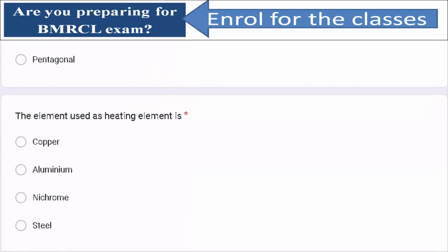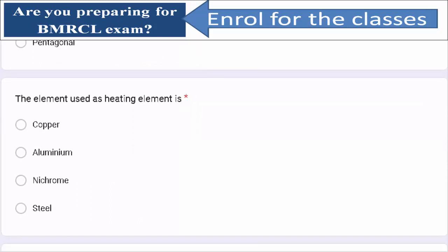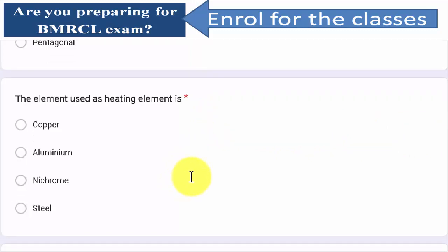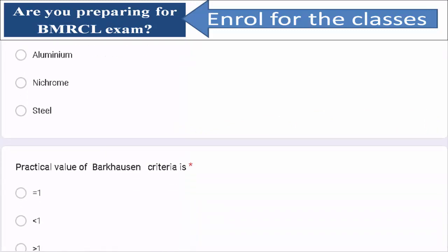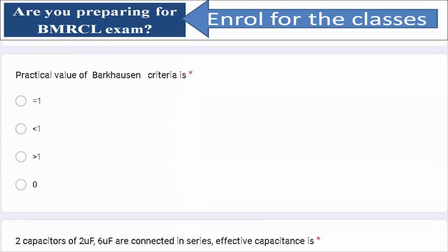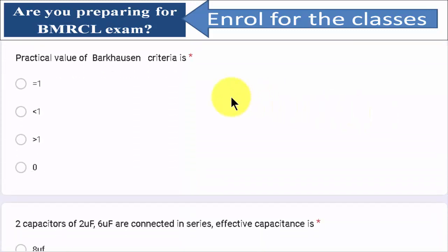The element used in heating — the heating element is nichrome. You need to know that nichrome is used because its melting point is high. Because of its high melting point, it is preferred. This question is again a trapping one.